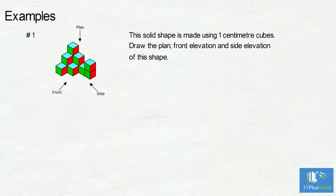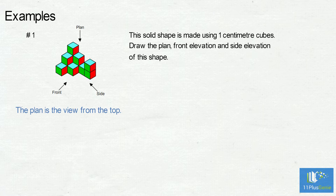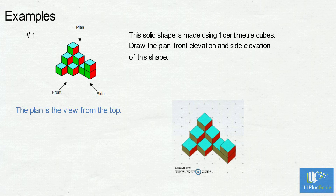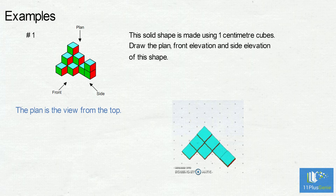Example one: draw the plan, front, and side elevation of the following 3D shape. The plan is the view from the top — we will see the light blue faces of the blocks and will not see depth; the faces will all appear on the same level. Let's look at an animation to see what the top of the shape looks like.